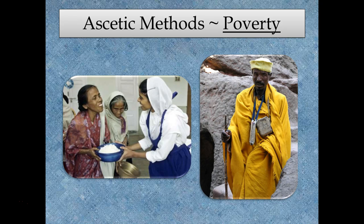Another ascetic method or discipline of monastics is the renunciation of goods and properties — either distributing their wealth and possessions to members of their family and joining an order, or donating the things that they own to the order.